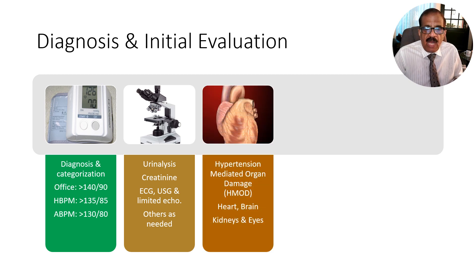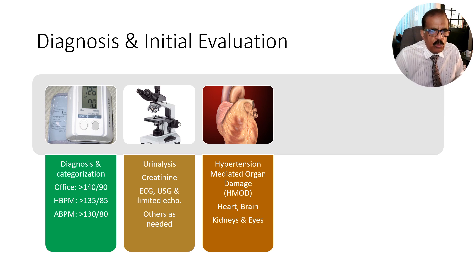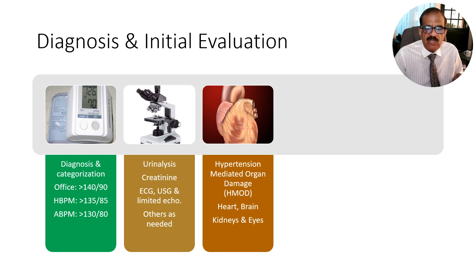There are certain complications we call hypertension-mediated organ damage. By initial evaluation we want to see if damage is already there related to heart, brain, kidneys, and eyes. We use all available tools — history, physical examination, and laboratory tests — to find out if some organs have already developed damage. That would indicate the urgency of treatment.